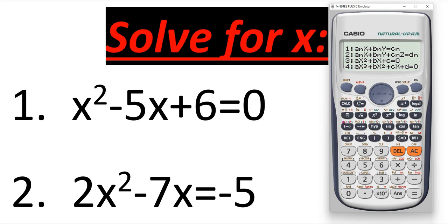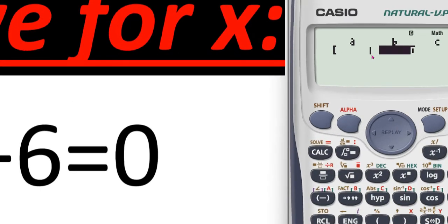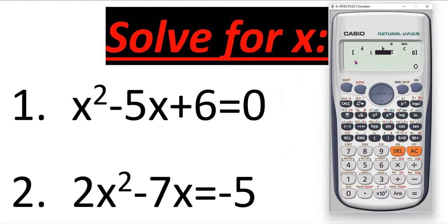Let's choose number three for quadratic equations. We have to give the values of a, b, and c. Let's solve equation one first. The value of a is the coefficient of x squared, which is one. Let's enter one and press equals — the one is stored in block a. The value of b is the coefficient of x, which is negative 5. The value of c is the constant term positive 6, which is already on the left-hand side. So we enter 6. We have now inserted all values of a, b, and c.